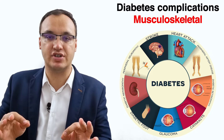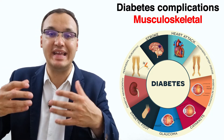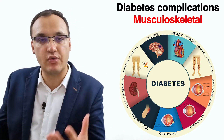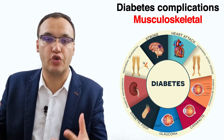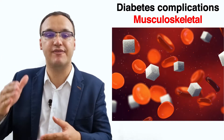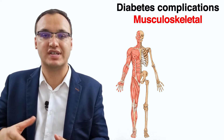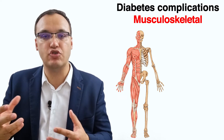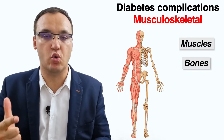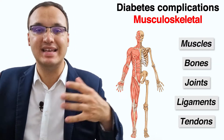Complications are the unwanted outcomes that can occur from an illness. These various complications usually occur when we have very high blood glucose levels and if it's left untreated. Diabetes can cause changes in your musculoskeletal system, including your muscles, your bones, your joints, your ligaments, and your tendons.